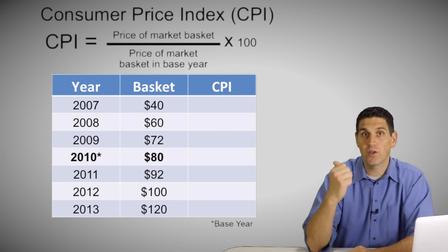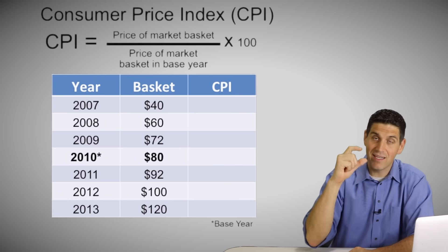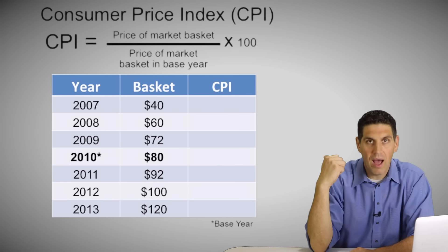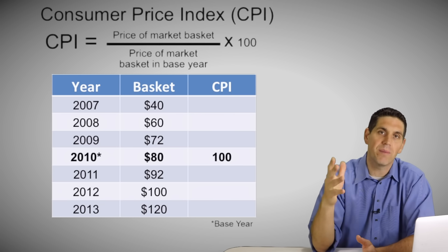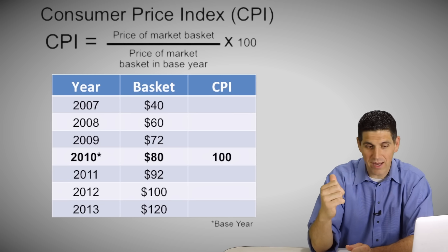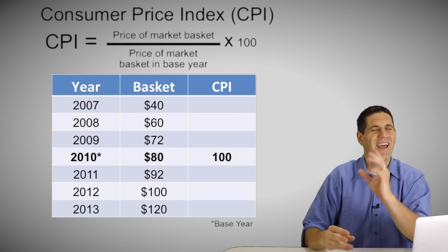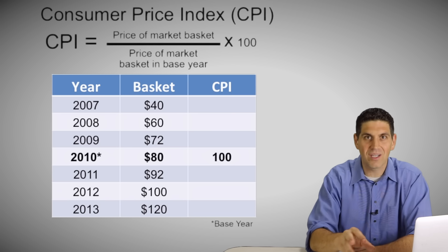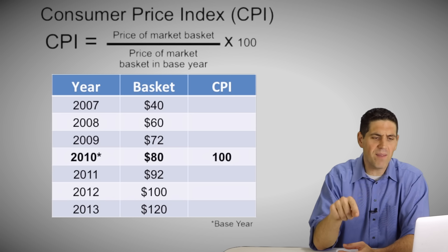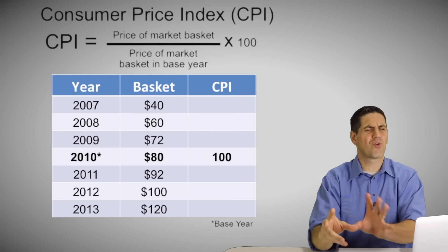The easiest one to spot is the CPI for 2010 — because it's the base year. In 2010, the value of the market basket is 80, and 80 divided by 80 times 100 gives you 100. The CPI in the base year is always 100. All values of the market basket less than 80 will give CPIs less than 100, and values greater than 80 will give CPIs greater than 100. You need to have an idea of what the number should be before using the equation — if the value is 60 and the base year is 80 but you get a number greater than 100, something went wrong.